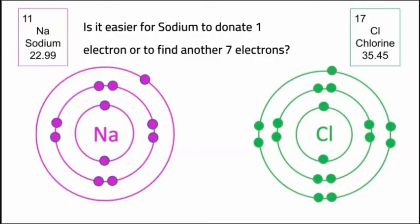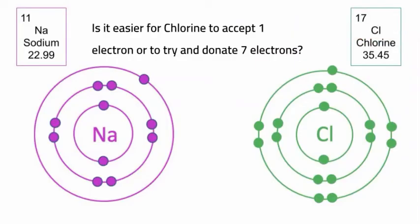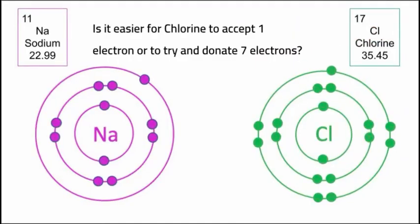Hopefully you answered that it seems easier for sodium to just donate one electron than for it to find seven others. Now look at chlorine. Chlorine has seven electrons in the outermost shell. Is it easiest for chlorine to accept one electron or to try and get rid of seven electrons?